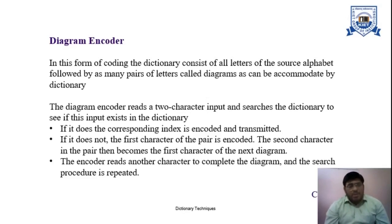If we do not find that pair of characters in the dictionary, we will try to find the first character of that pair. If we find that particular single character, we code that character and the second character will become the first character for the next diagram. That procedure will be repeated till our given input sequence is finished.